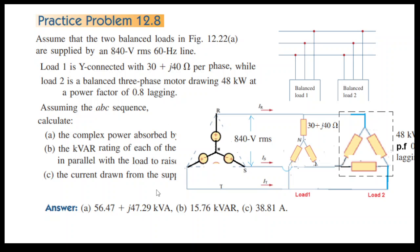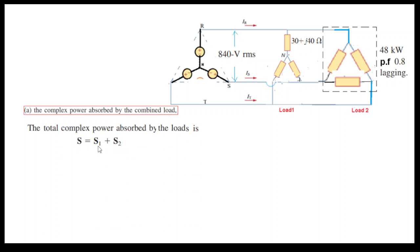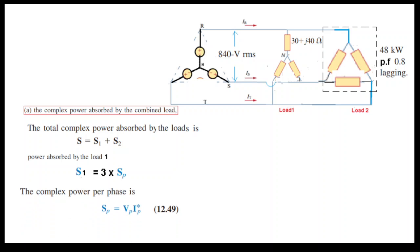Let's proceed. First, we have to find the complex power absorbed by the combined load. The combined complex power will be the power absorbed by load one plus load two. The power absorbed by load one is three times the power absorbed by a single phase, so let's find the power of a single phase first.